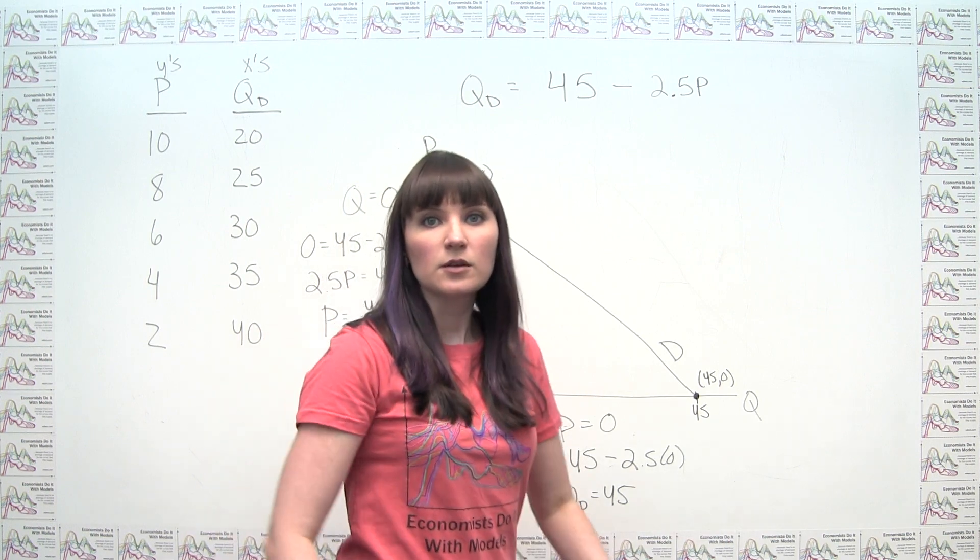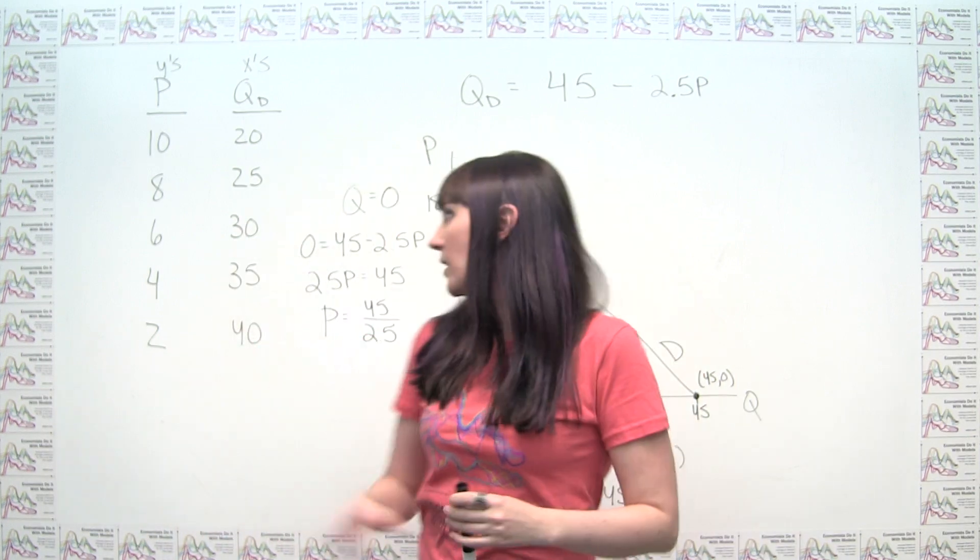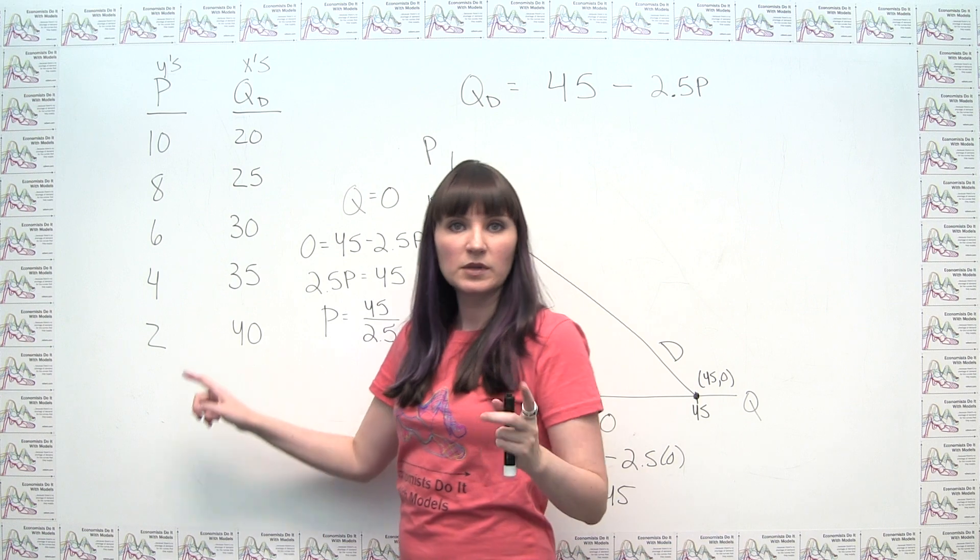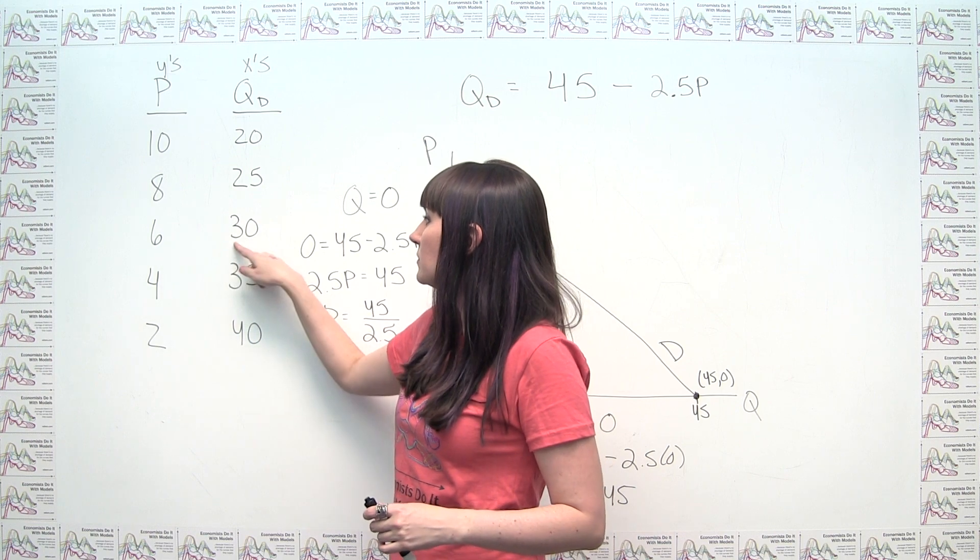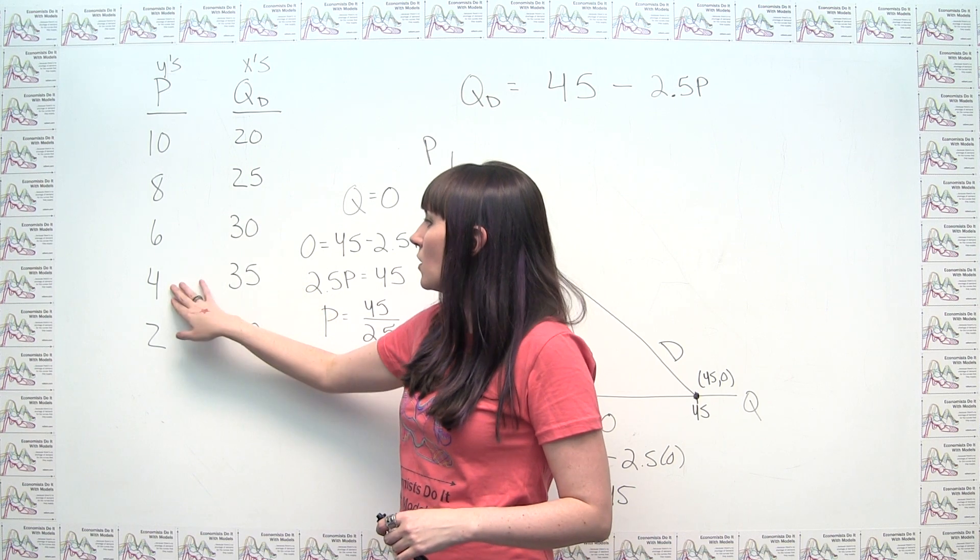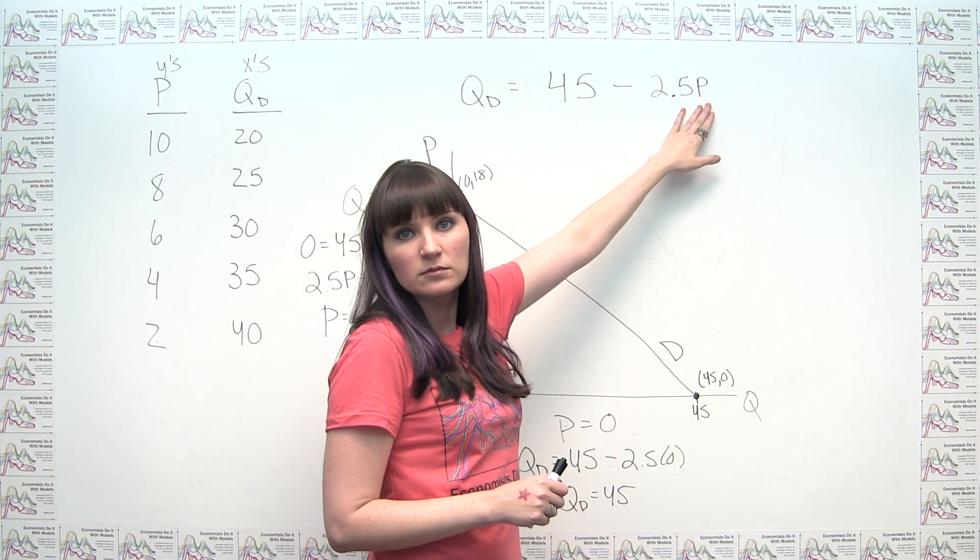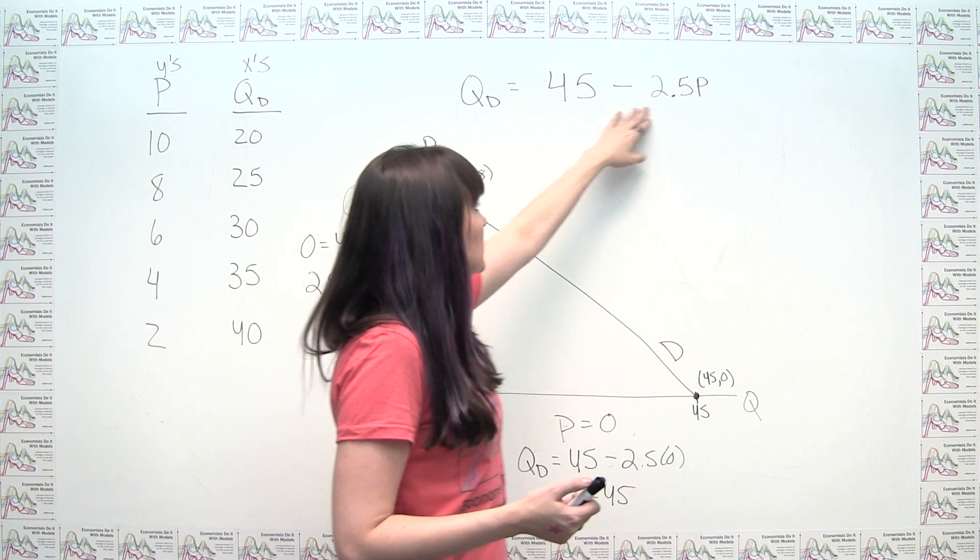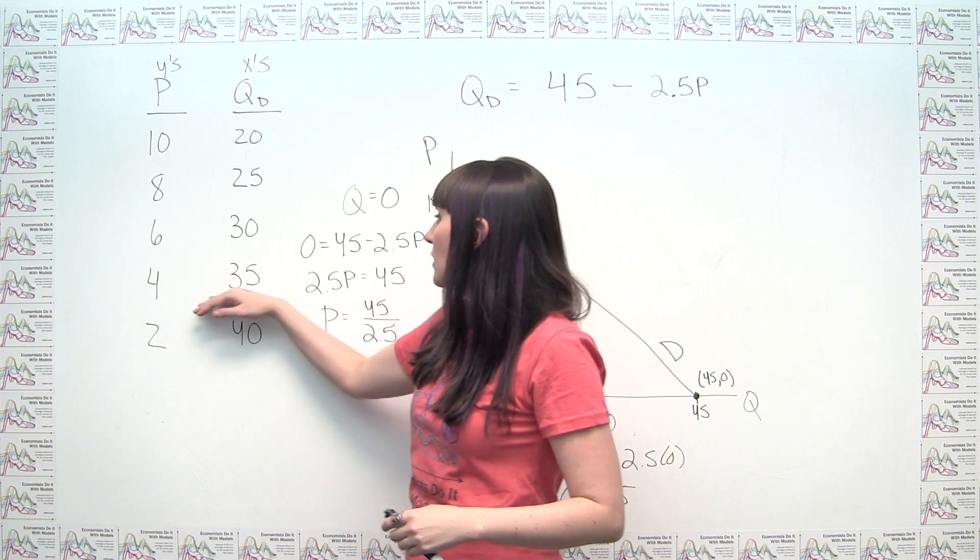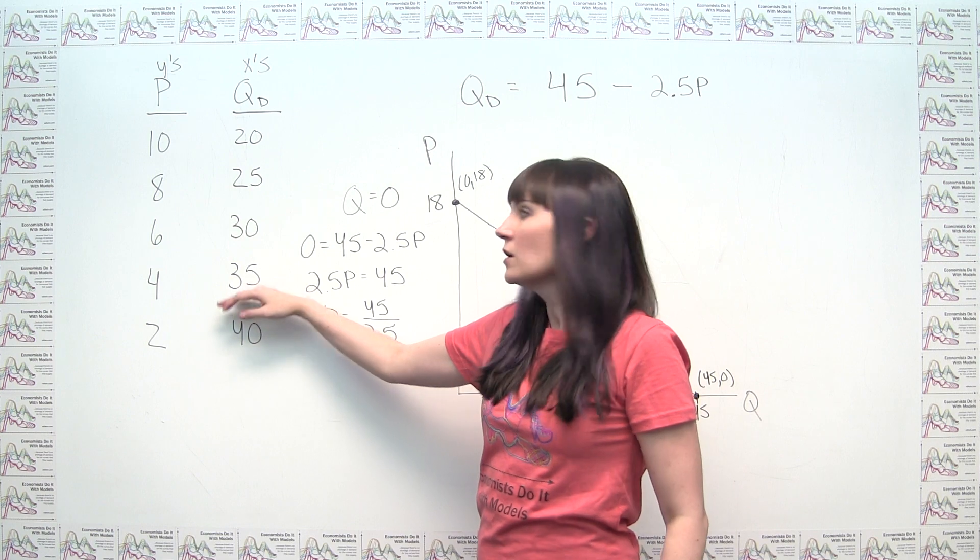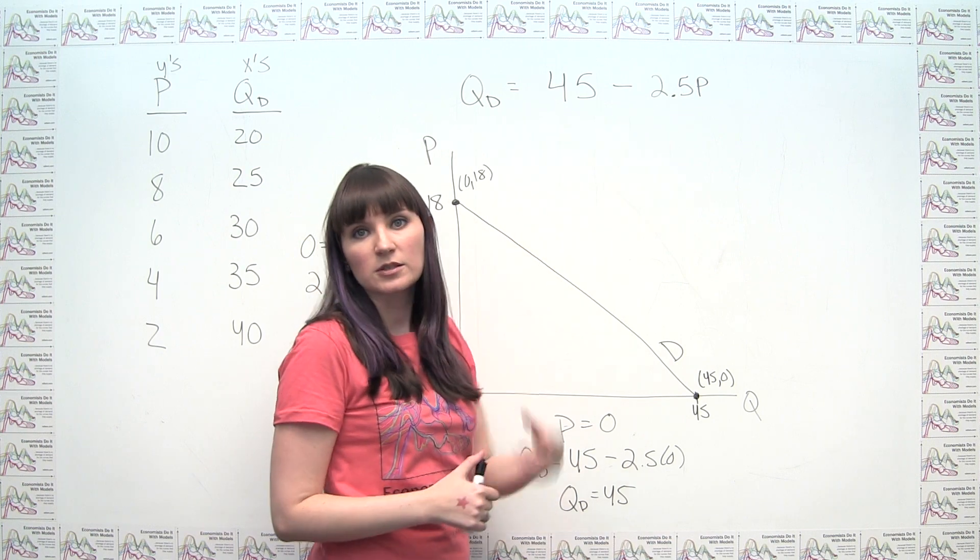Another interesting thing that you can note is that this demand curve, algebraically, is the same guy that we plotted before. Let's check this out. If I were to think about one of the points on this curve here, when price is 4, let's plug in a price of 4. 2.5 times 4 is 10. 45 minus 10 is 35. And hey, check this out. When the price is 4, we have a quantity demanded of 35. And we can do this with all the other points and see that, in fact, they're all consistent with the equation of the line here.